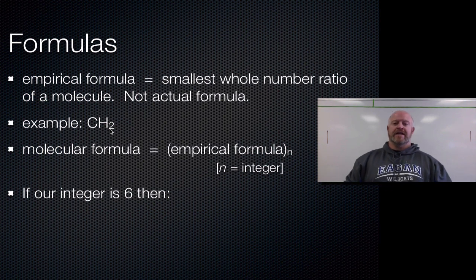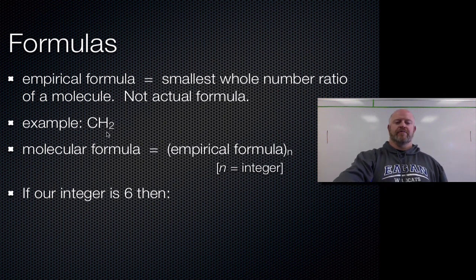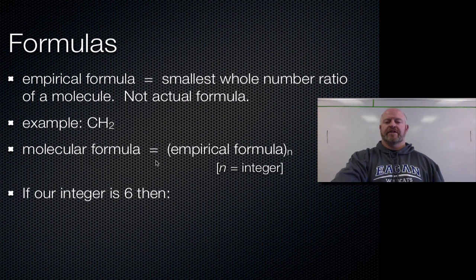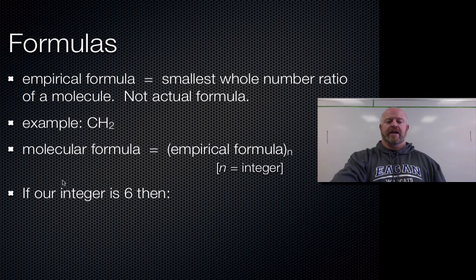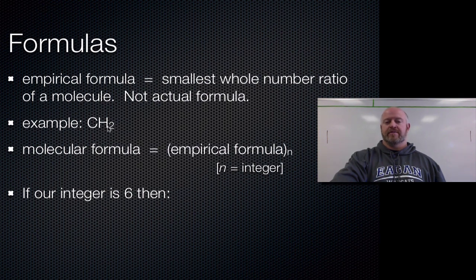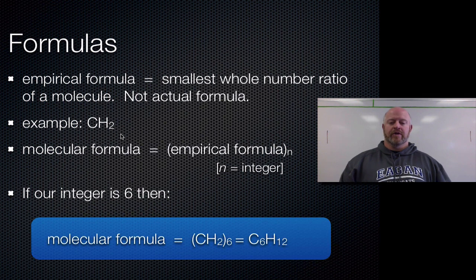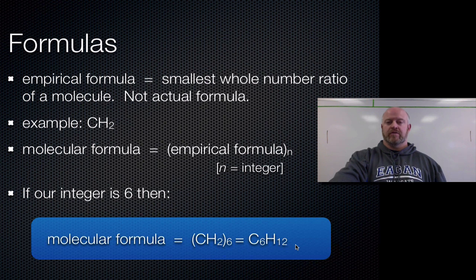This empirical formula could be any multiplication of that one to two ratio. So if you're looking at the molecular formula for a compound, what we do is we take the empirical formula times some sort of n or some sort of integer. For example, if we had the empirical formula CH₂ and our integer was 6, we would just take the C, which is a 1, times 6, and the H, which is a 2, times 6. And our molecular formula for our compound would be C₆H₁₂.